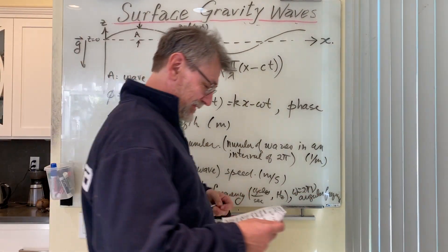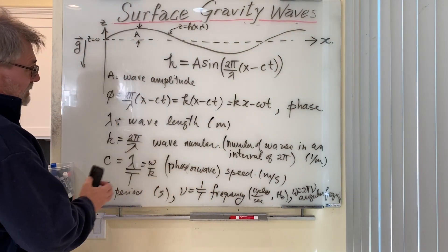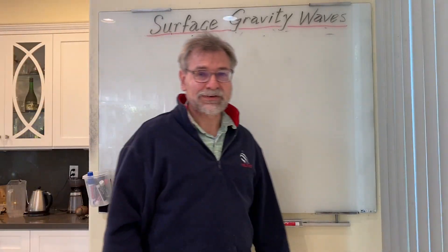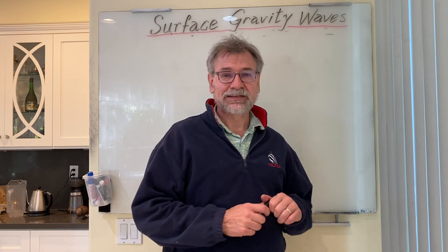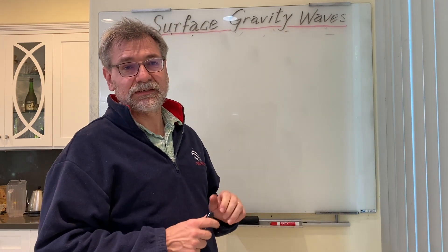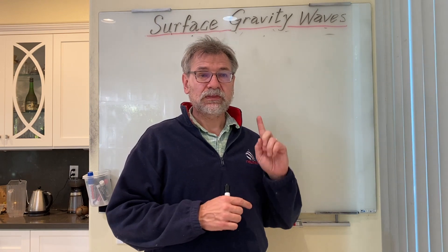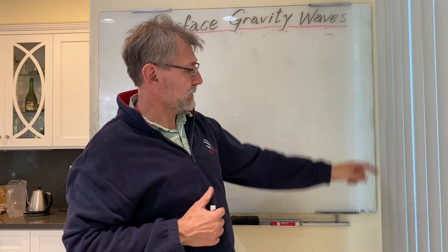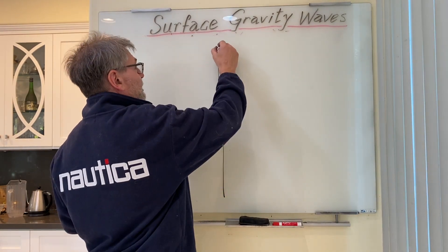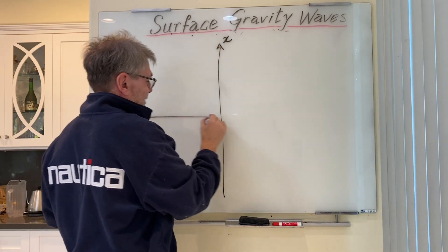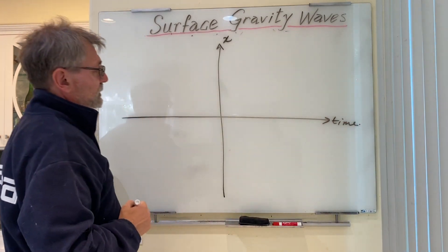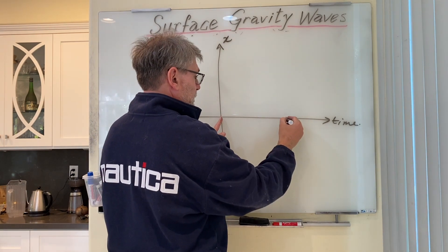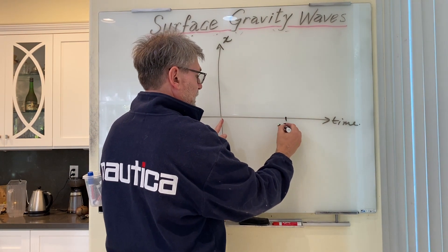To help put all these definitions in order, I'll make a picture of crests and troughs in a plane with x pointing upward and time pointing to the right. Up here is distance in the x direction, and this axis is time T. If I mark off a distance of one period out here, from here to here, this is T — time equal to one period. And if I mark off a distance of one wavelength, x equals lambda.